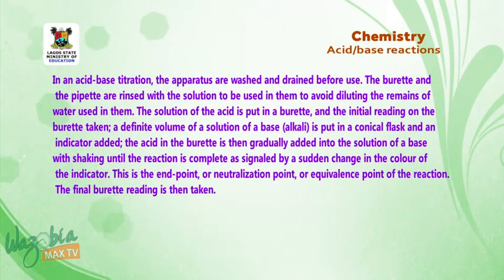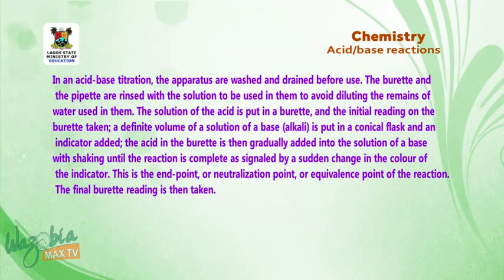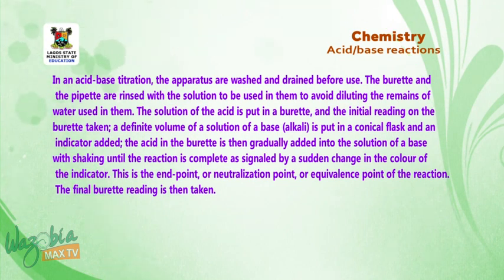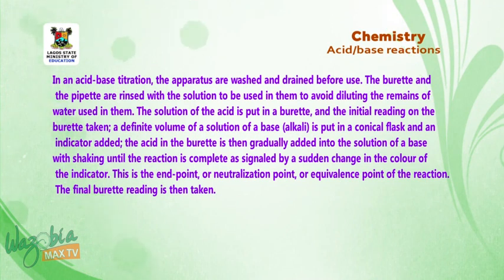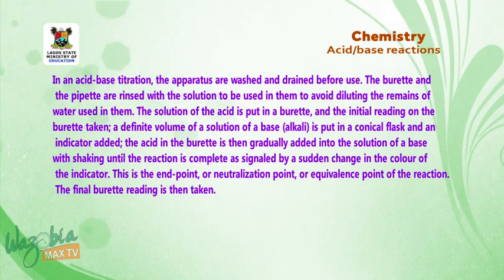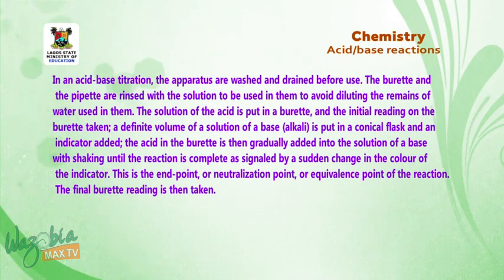In an acid-base titration, the apparatus are washed and drained before use. The burette and the pipette are rinsed with the solution to be used in them to avoid diluting the remains of water. The solution of the acid is put in the burette and the initial reading taken. A definite volume of the base is put in a conical flask and an indicator added. The acid is then gradually added with shaking until the reaction is complete, signaled by a sudden change in color of the indicator. This is the end point, also called the neutralization point or equivalence point. The final burette reading is then taken.